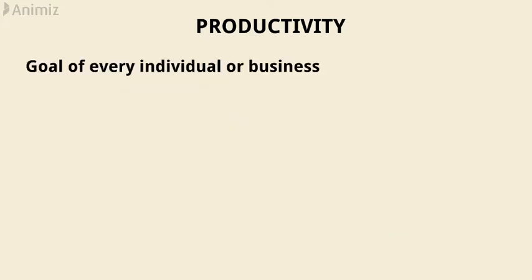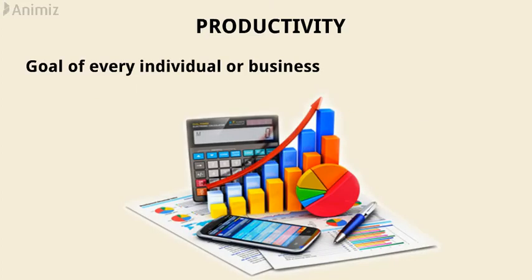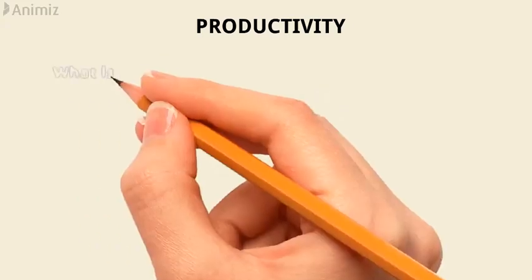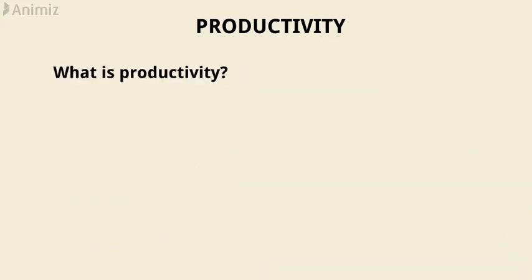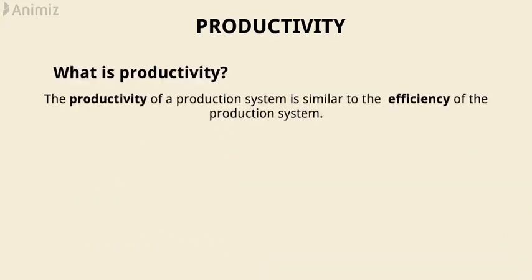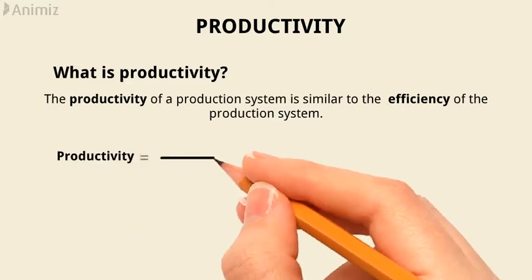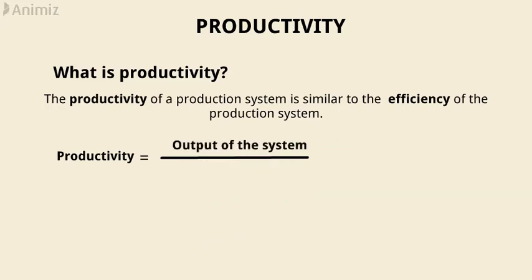The goal of every individual or business is to be productive. So, what is productivity? The productivity of a production system is similar to the efficiency of the production system. Productivity may be defined as the ratio of the output of the system to its input.